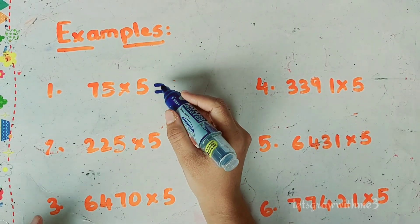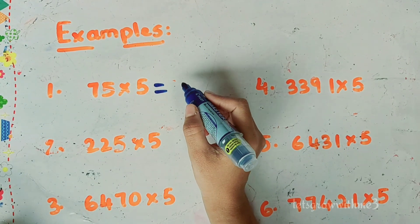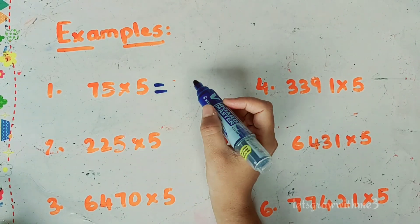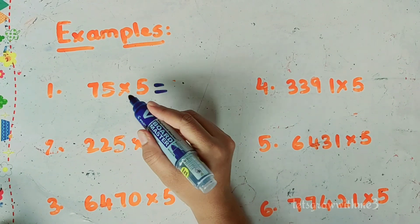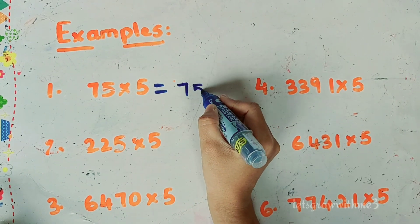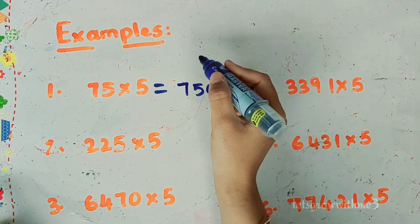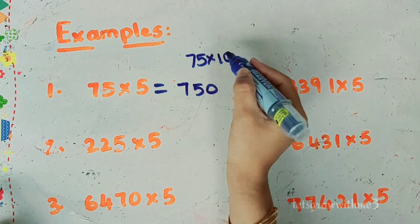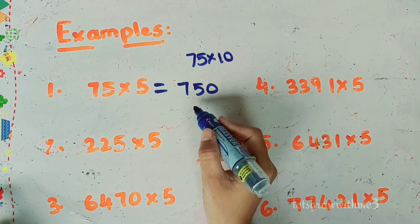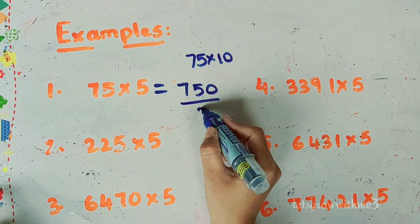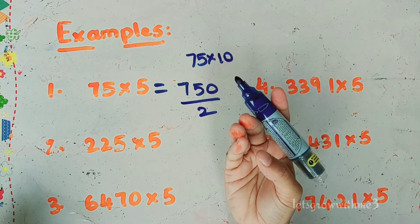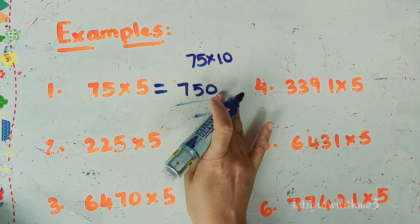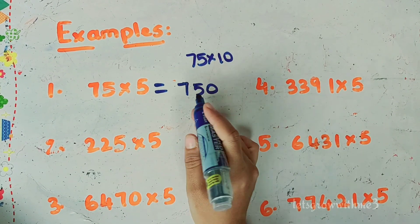So that's 75 times 5. What I've done is to multiply this time. So 75 times 5. You want to divide this time. I will use the number 1. So this is the number 2.